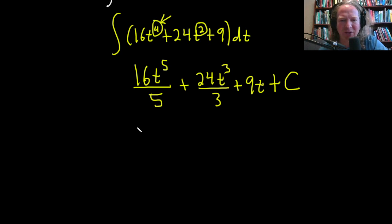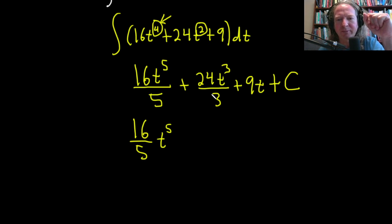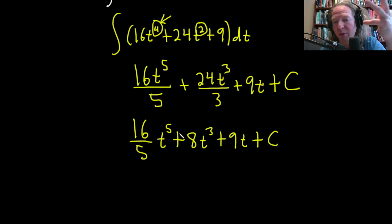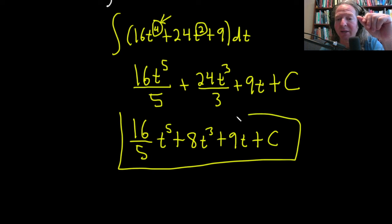I don't like the way this is written. I'm going to write it like this. 16 over 5t to the 5th. I just prefer to have things out front. 3 goes into 24 8 times. This is 8t cubed. And we have the 9t. Very nice. And then we still have our constant of integration, which is capital C. And that would be the answer to this integral.